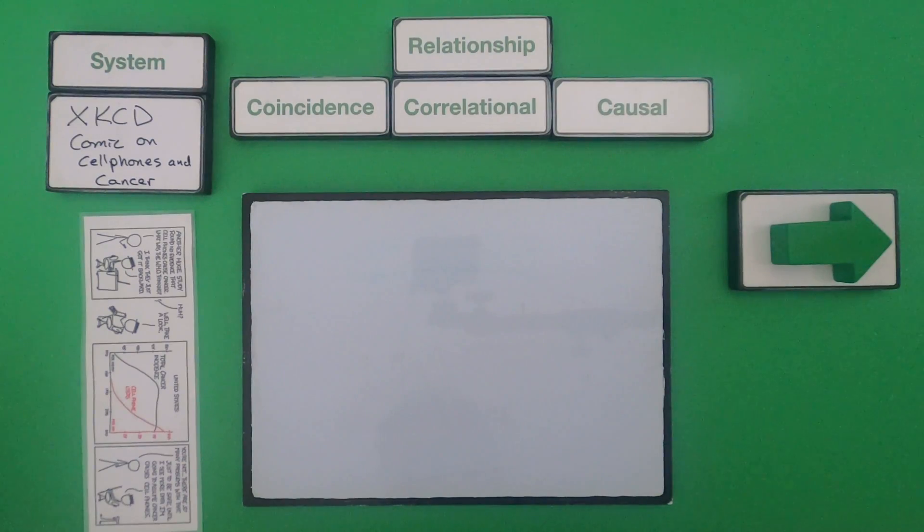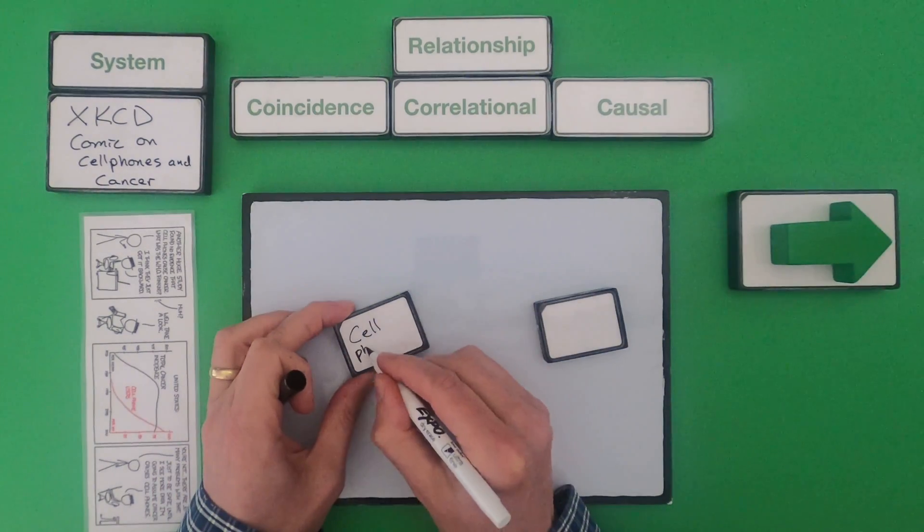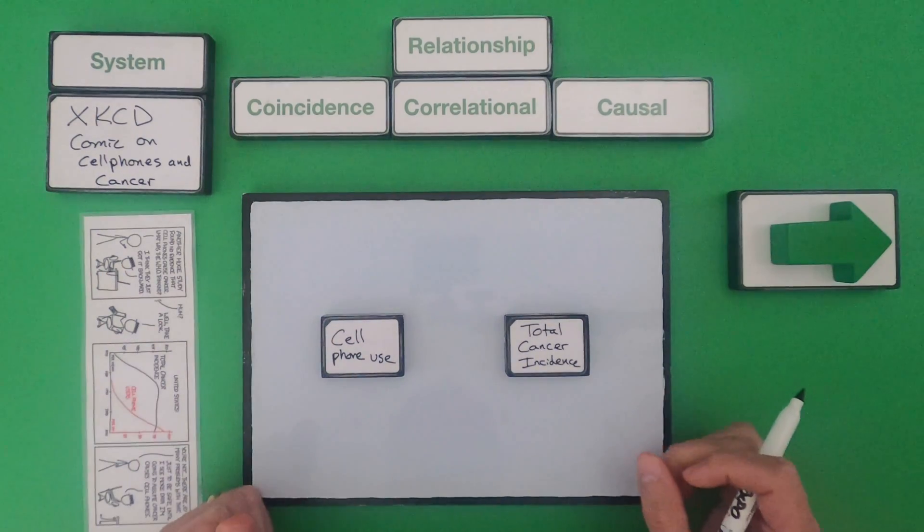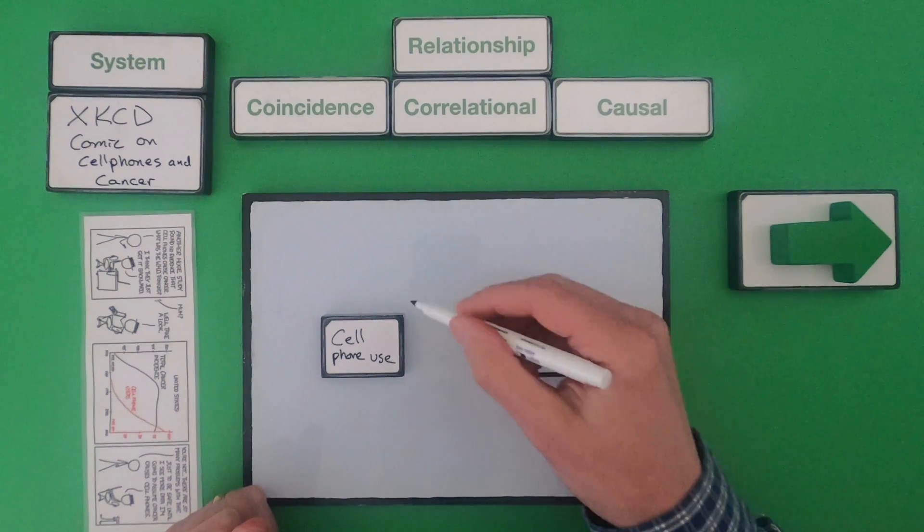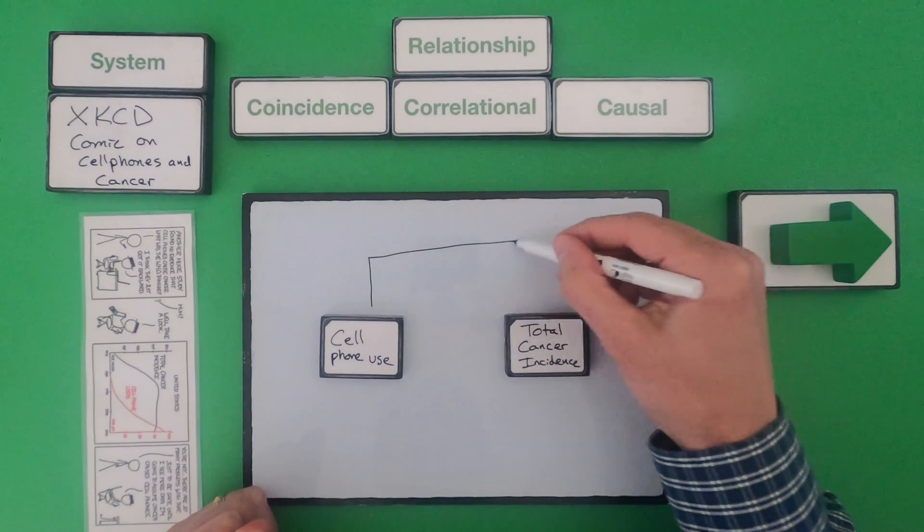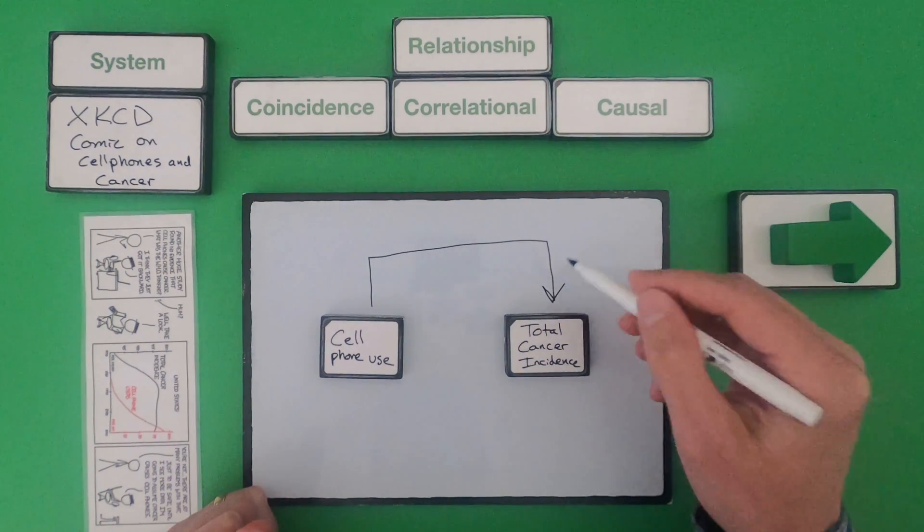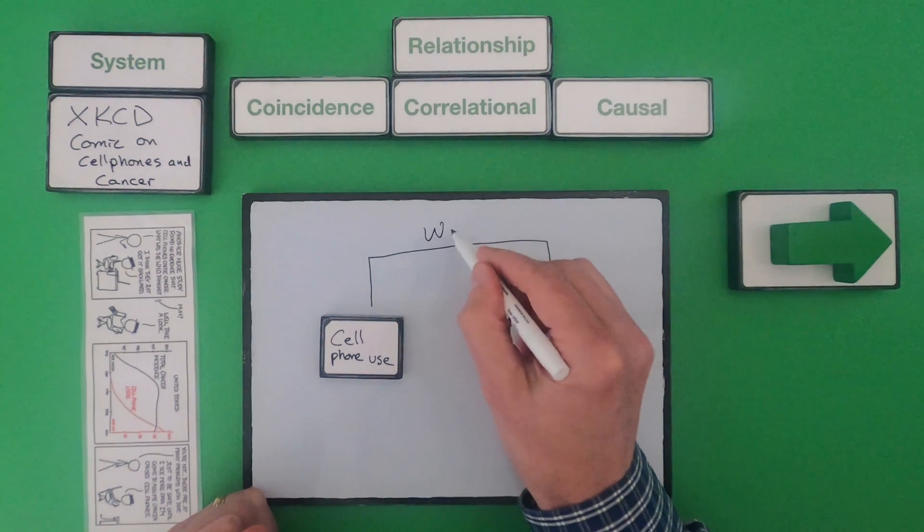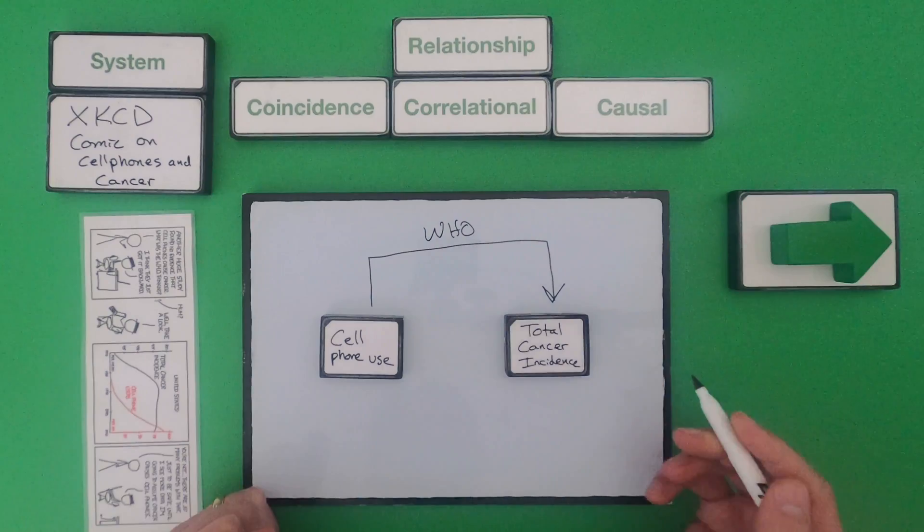Okay, the first thing I would do is I would define what is happening and what are all the claims being made about the relationships. Okay, if we put these out in the comic, the World Health Organization, according to the comic, is saying that cell phone use is causing an increase in the total cancer incidence. So we could say this is the World Health Organization.